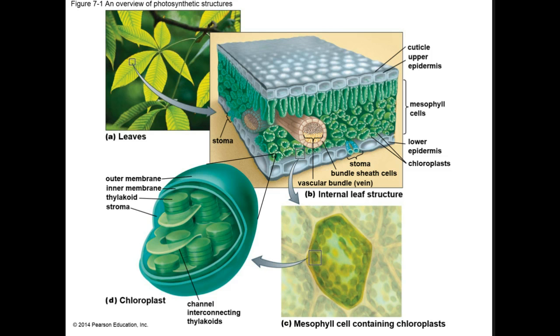Chloroplasts are organelles with a double membrane enclosing a fluid called the stroma. Embedded in the stroma are disc-shaped membranous sacs called thylakoids.